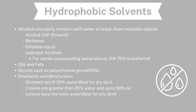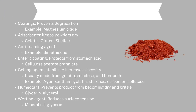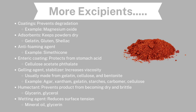Alcohol USP is ethanol; there is also menthol, ethylene glycol, and isopropyl alcohol, which is used for sterile compounding — 70 percent is preferred. There are oils and fats, glycols such as polyethylene glycol (PEG), emollients and moisturizers. Ointments typically contain 0–20% water; creams are greater than 20% but up to 50% oil; lotions have the most water and are best for oily skin, while ointments are best for dry skin.